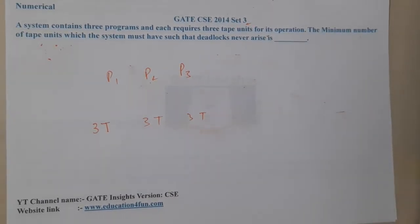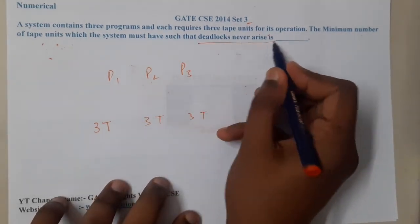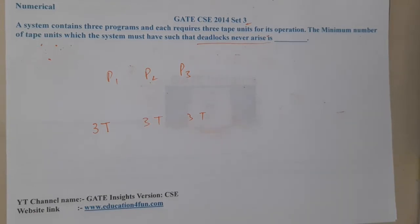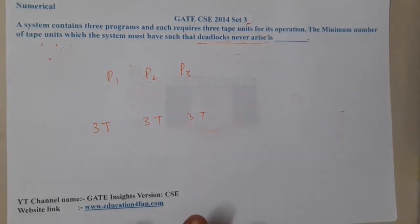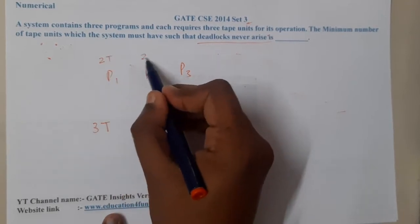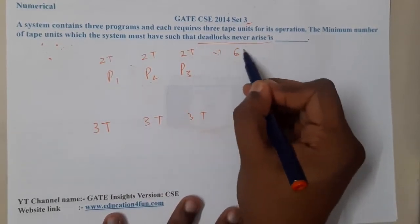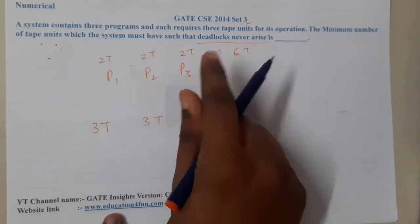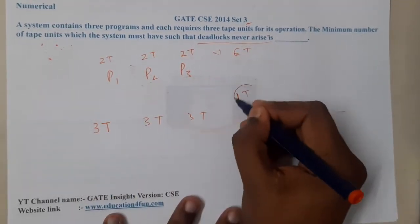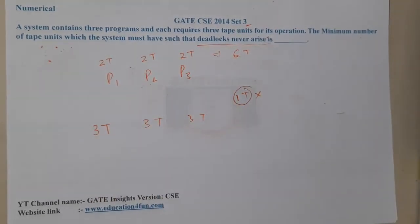They are asking for the minimum number of tape units the system must have so that deadlock will never arise. If we want to form a deadlock, we give the minimum things we can. So I will give two tapes for each of the three programs — when my total count is six tapes, giving two to each, everyone is waiting for one more tape that doesn't exist, so everyone is in deadlock.